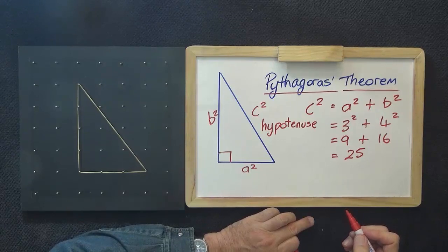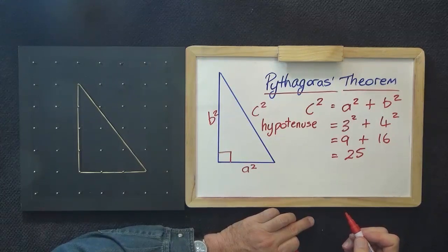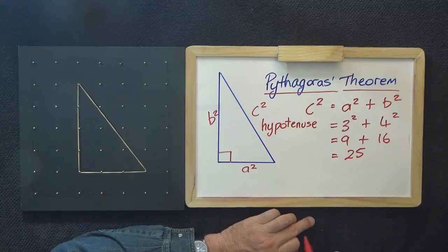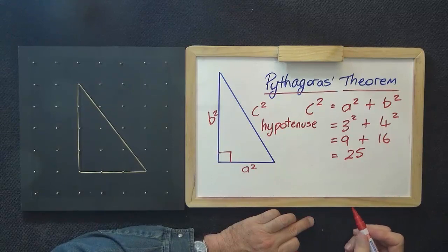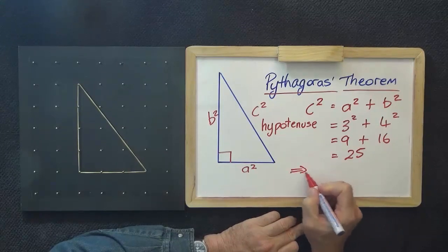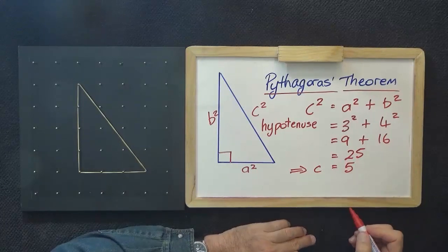Of course, the solution to that in algebra is plus or minus 5. But because it's geometry, we don't have to worry about the negative number. So C is 5.